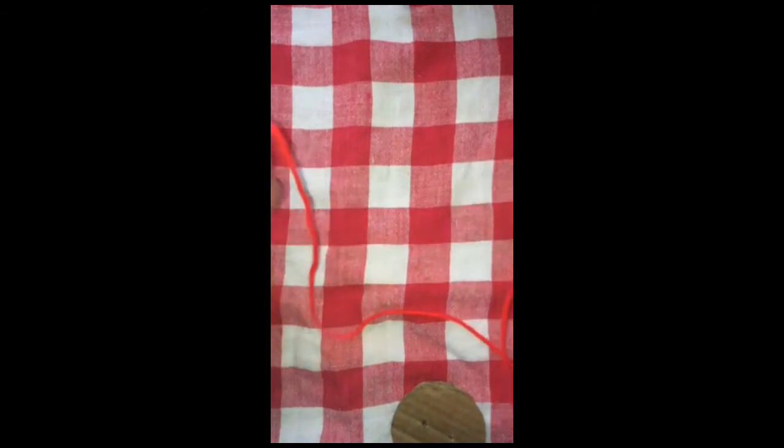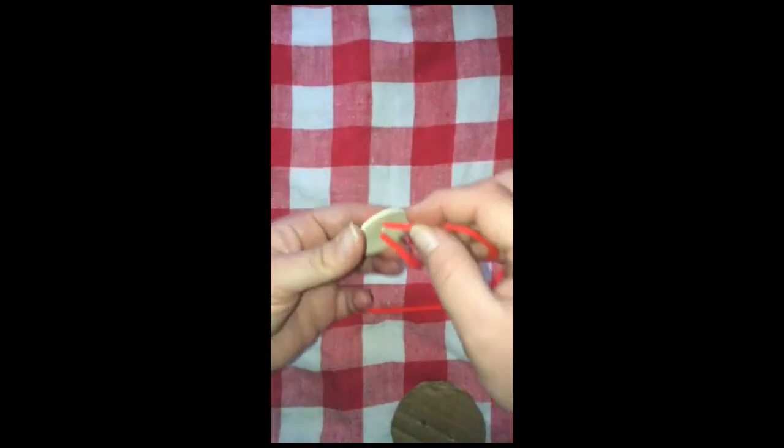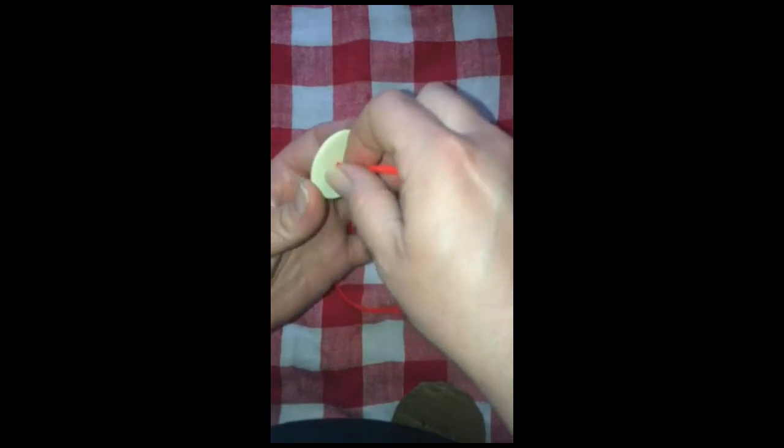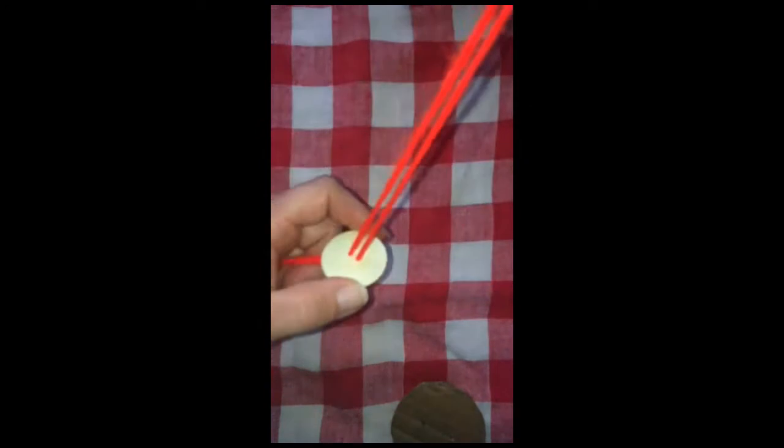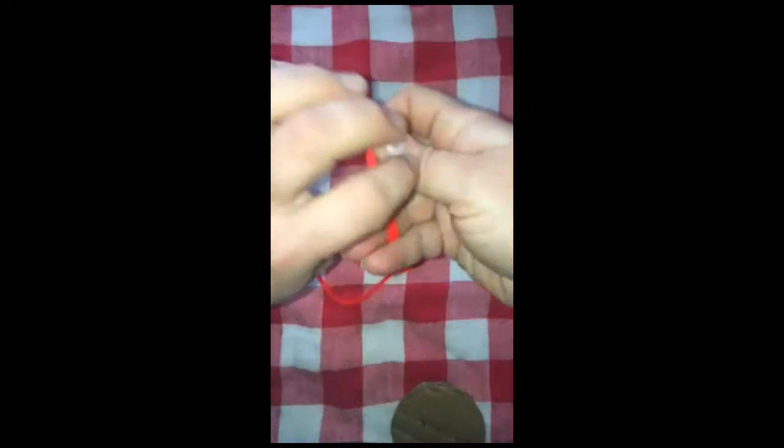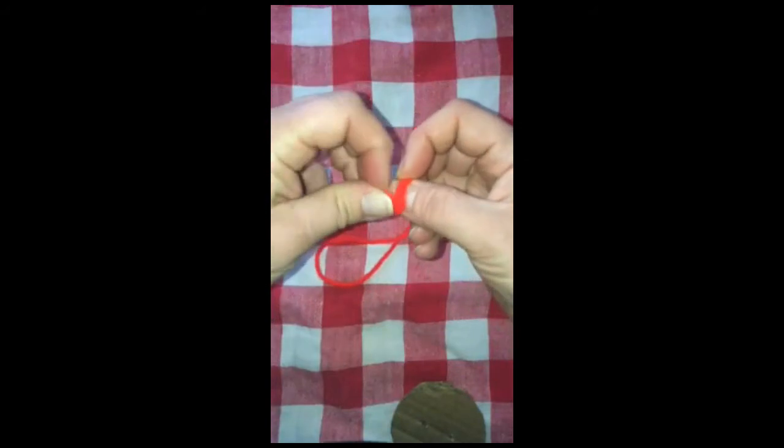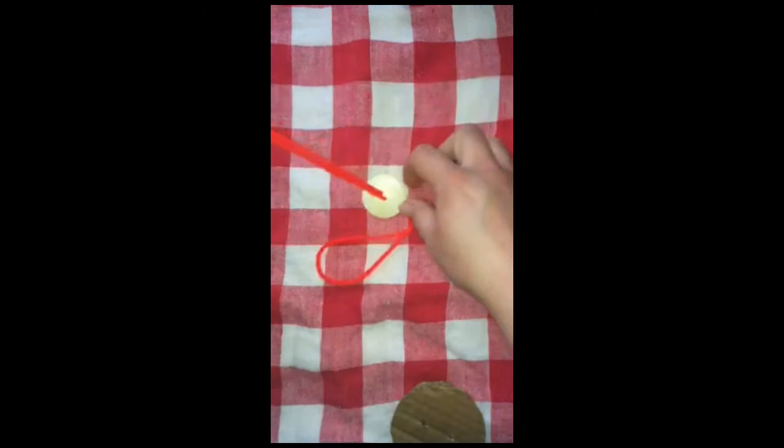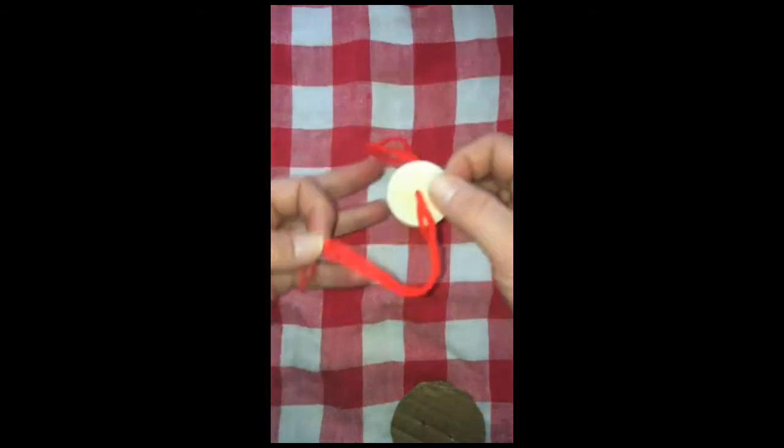Now, once you have your button and your yarn cut to size, then you're going to thread that yarn through the holes in the button. Pull that through and then just tie a quick knot on both of the cut ends of the yarn. And then you have something that looks like this.